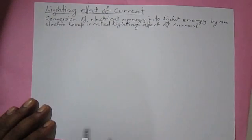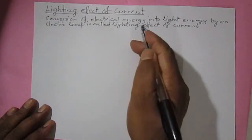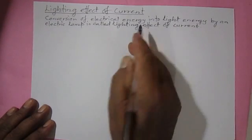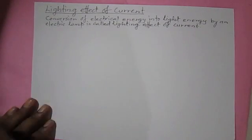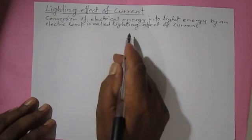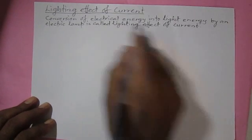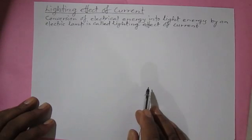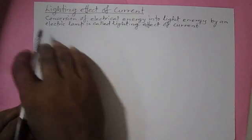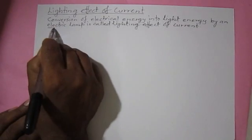The lighting effect is defined as the conversion of electrical energy into light energy by an electric lamp. This is called the lighting effect of current.